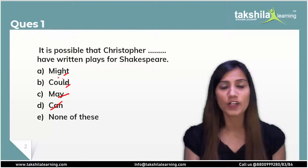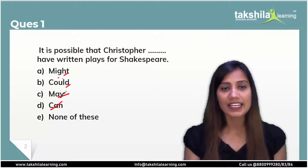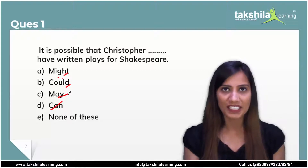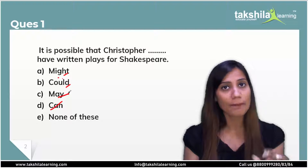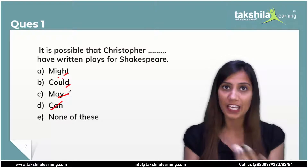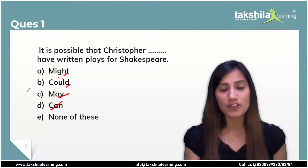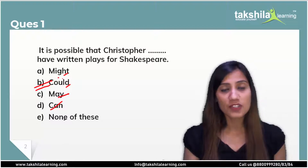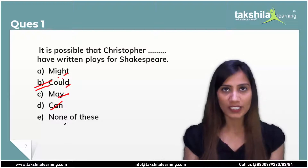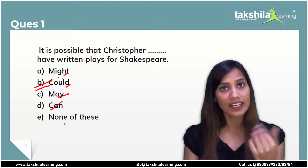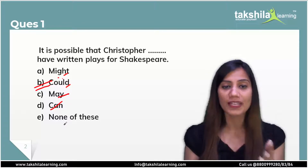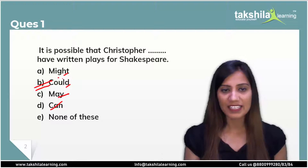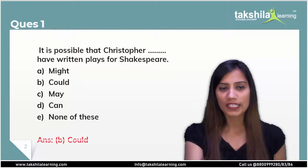The past forms used here are might or could. So now, between these two, what can come? 'It is possible that Kristopher could have written plays' or 'It is possible that Kristopher might have written plays for Shakespeare.' It is possible that he may have written some plays. The correct form here is option B — could. 'It is possible that Kristopher could have written' — could is the past form of can. So the correct answer for question 1 is option B: could.